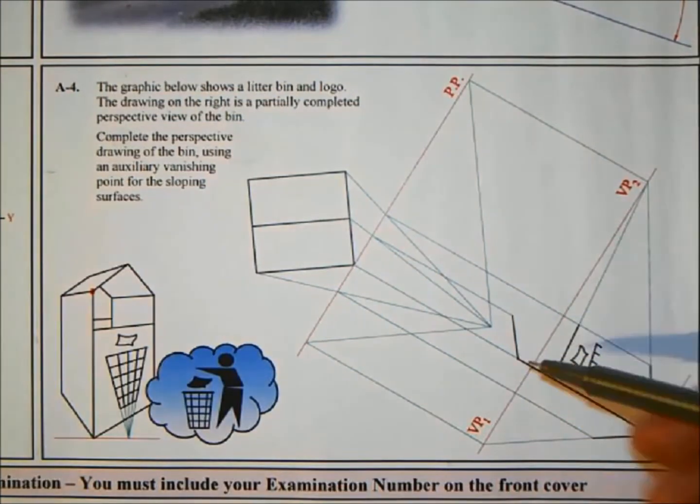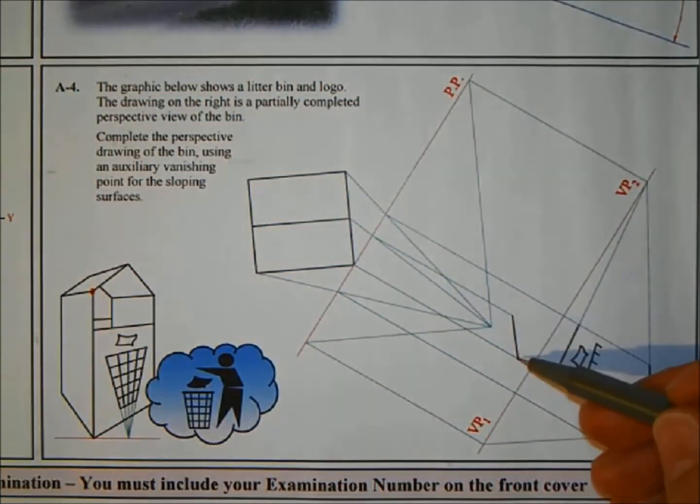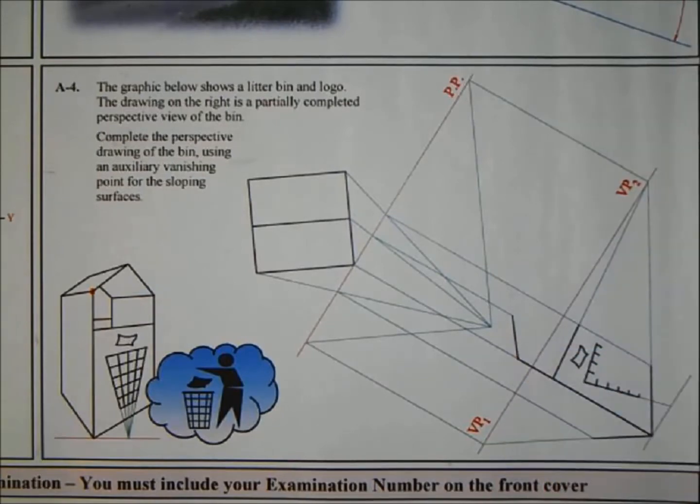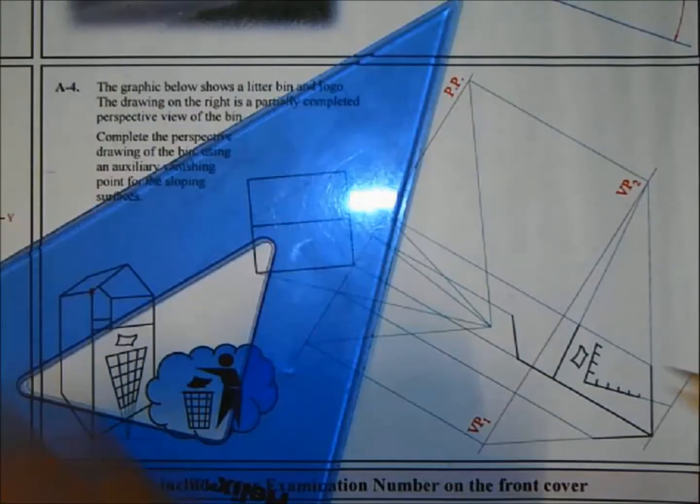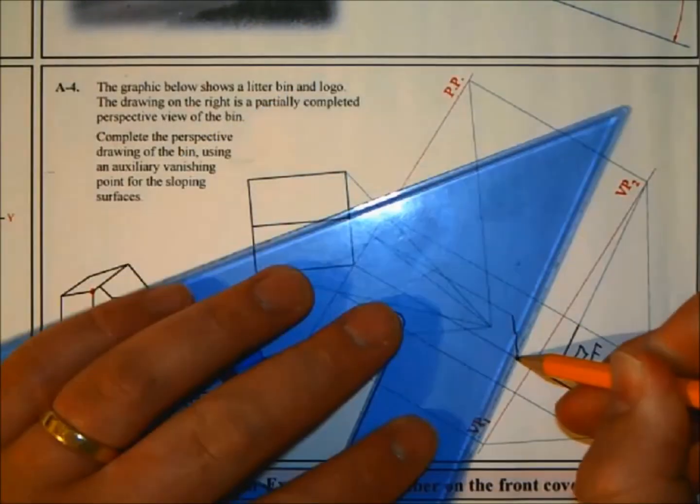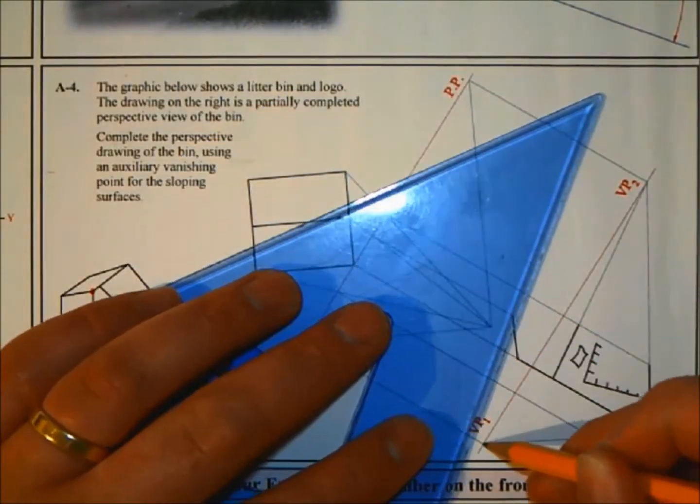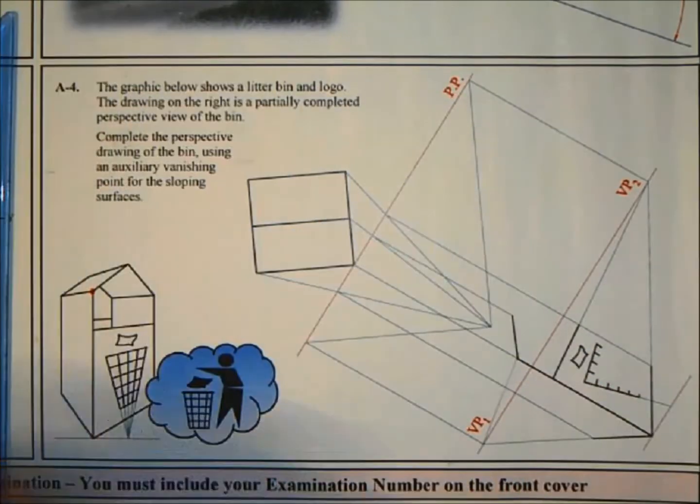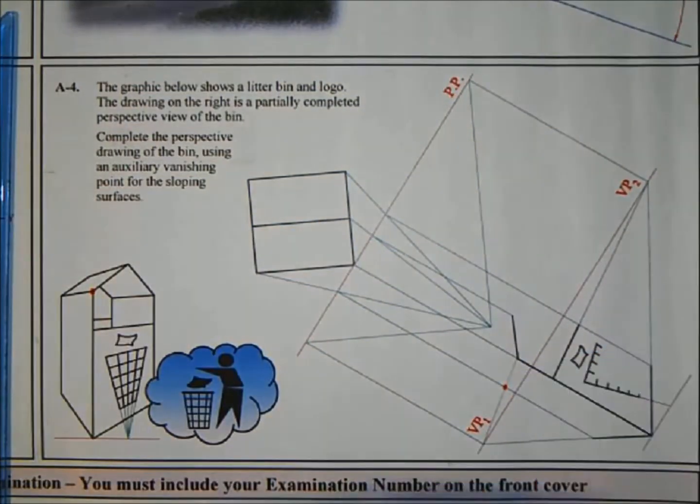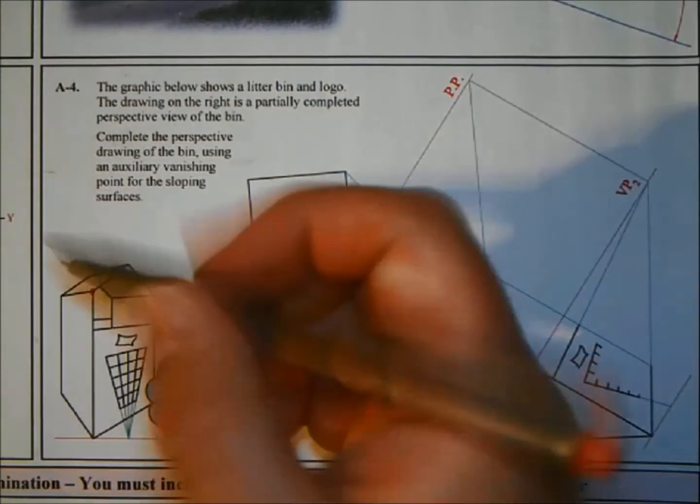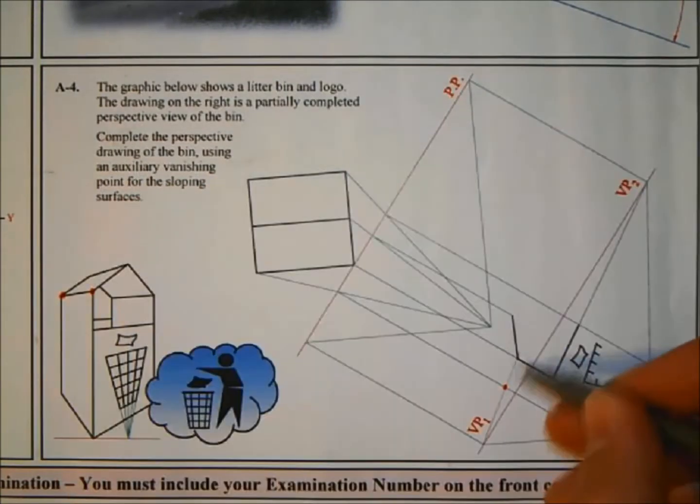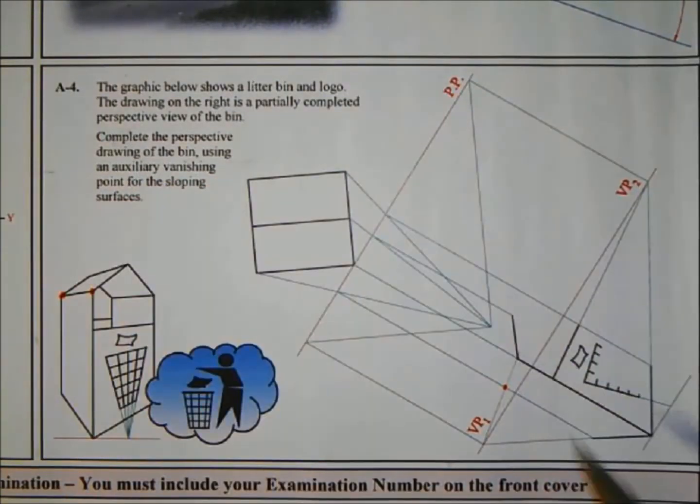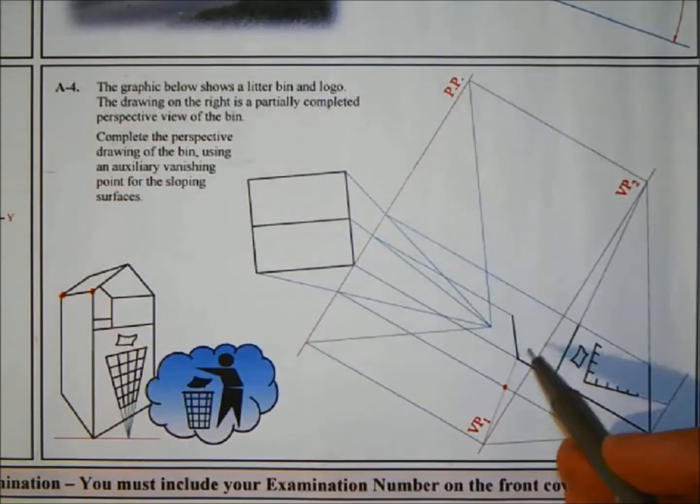So let's figure out that back corner first. To figure out the back corner, join that point. It's vanishing over to the left so therefore let's go to the vanishing point VP1. Join that point back to VP1 and wherever it crosses that's our point here. That's the back of the bin, that's the line done there.